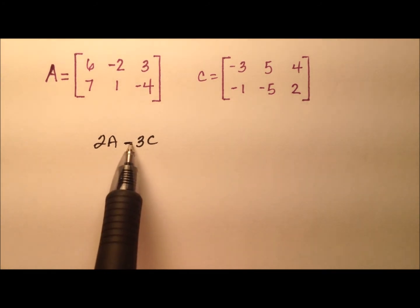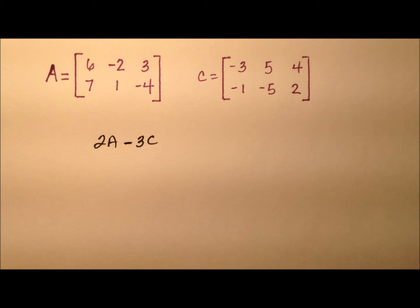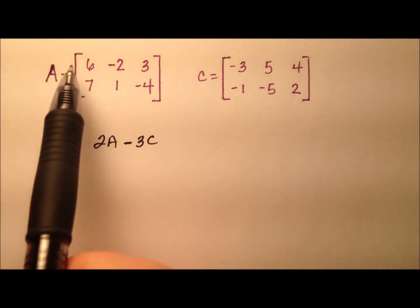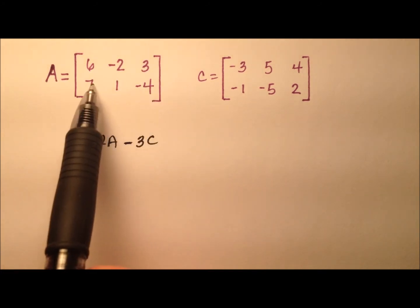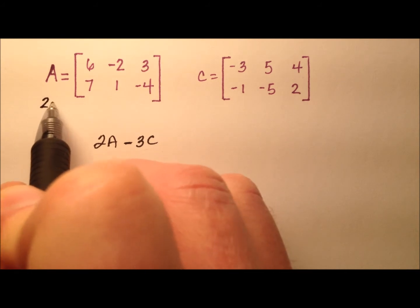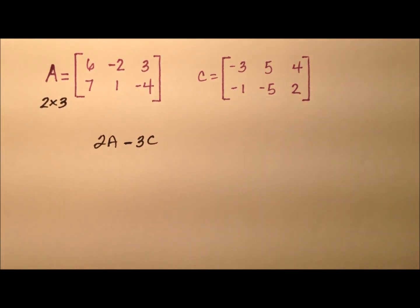But before we can do the subtraction, let's make sure that these matrices have the same dimensions so that the subtraction we would like to do is defined in the first place. So, matrix A looks like it has 2 rows and 3 columns, so this will be a 2 by 3 matrix.